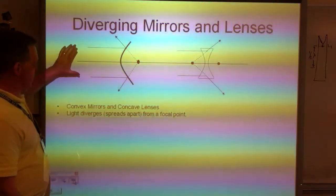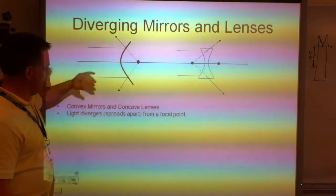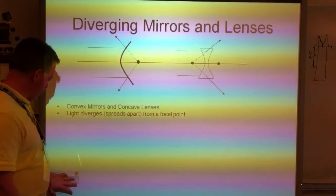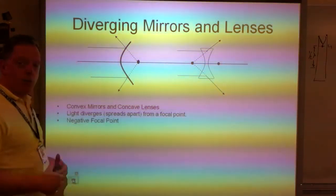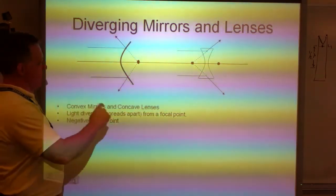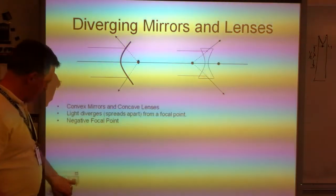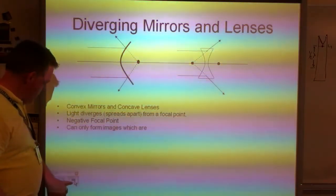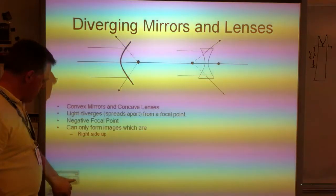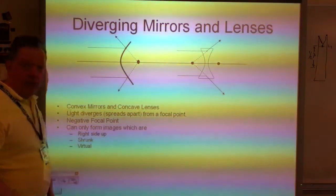Light that comes in parallel is going to diverge or spread out from the focal point. And when we do the math, we have to remember that the focus for these is negative. Now, these can only form images which are right-side-up, shrunk, and virtual.